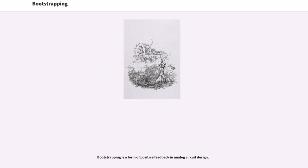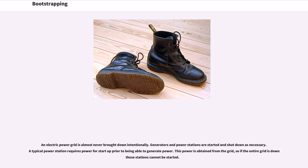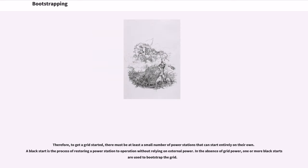Bootstrapping is a form of positive feedback in analog circuit design. An electric power grid is almost never brought down intentionally; generators and power stations are started and shut down as necessary. A typical power station requires power for startup prior to being able to generate power. This power is obtained from the grid, so if the entire grid is down the stations cannot be started. Therefore, to get a grid started, there must be at least a small number of power stations that can start entirely on their own. A black start is the process of restoring a power station to operation without relying on external power. In the absence of grid power, one or more black starts are used to bootstrap the grid.